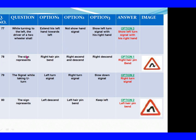Question 78: The sign represents. Option 1: Right hand pin bend. Option 2: Right turn signal. The right answer is Option 2: Right turn signal. Question 83: The sign represents. Option 1: Left descent. Option 2: Left hair pin bend. Option 3: Keep left. The right answer is Option 2: Left hair pin bend.